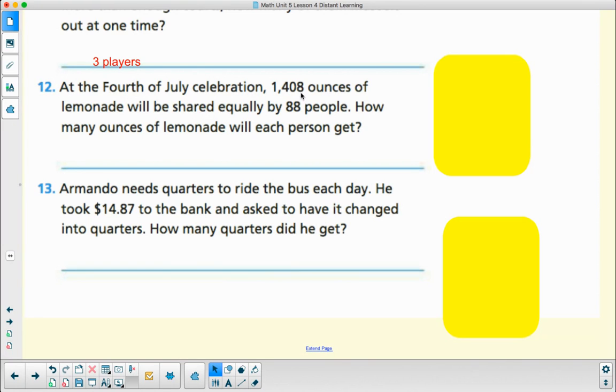At the 4th of July celebration, 1,408 ounces of lemonade will be shared equally by 88 people. How many ounces of lemonade will each person get? We have 1,408 ounces divided by 88 people. In this one I didn't have a remainder. I don't know why they put this in this lesson. They each get 16 ounces with none remaining.